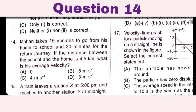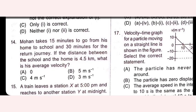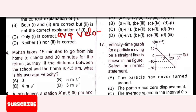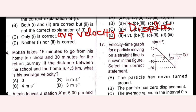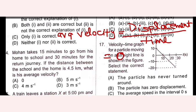Mohan takes 15 minutes to go from home to school and 30 minutes for the return journey. The distance between home and school is 4.5 km. What is the average velocity? Average velocity equals displacement divided by time. Since he returns home, his final position equals his initial position, so displacement is 0. Therefore average velocity is 0. Option A is the right answer.